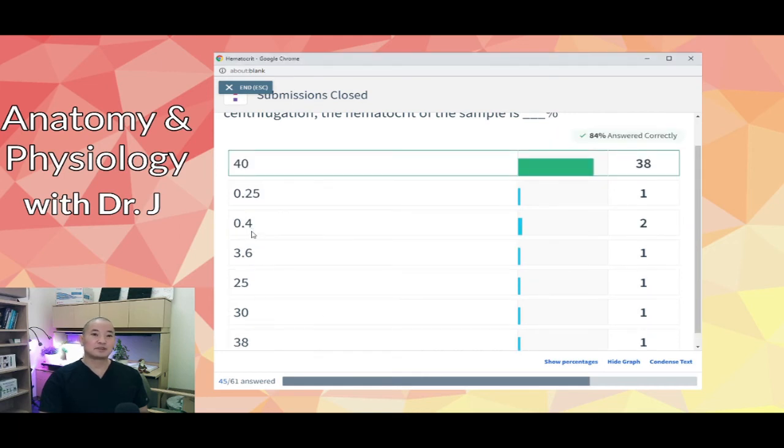Again, people who said 0.4, that's the decimal you get from dividing 1.2 by 3, but you have to convert a decimal to a percentage. In normal samples, like in normal patient samples, the hematocrit would be the same as, or almost the same as, the red blood cell percentage.